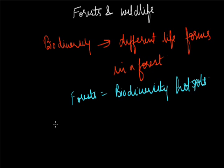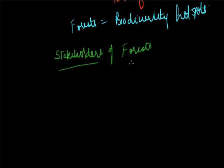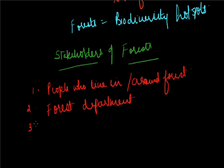Next topic is stakeholders of forest. Who are the people who live in the forest and what are the benefits they are drawing from the forest. There are four categories of stakeholders who reside in a forest. First is people who live in or around forest. Second is forest department of the government. Third are industrialists, and fourth is wildlife and nature enthusiasts.